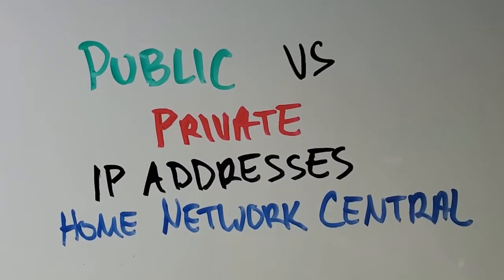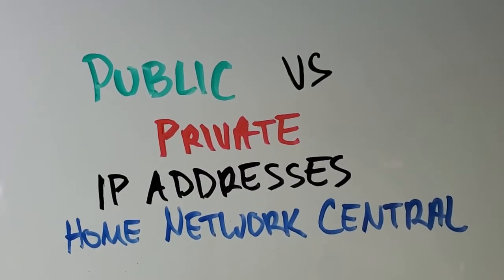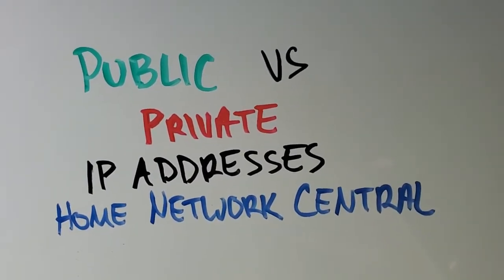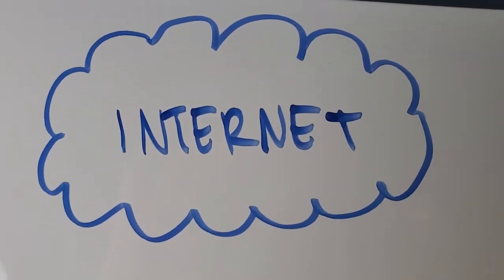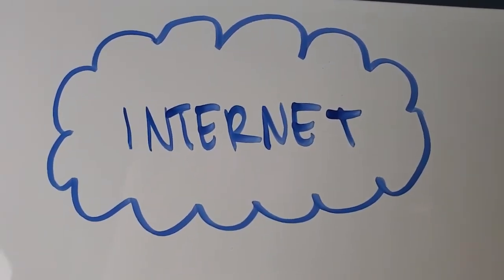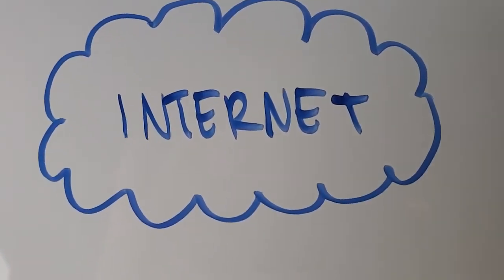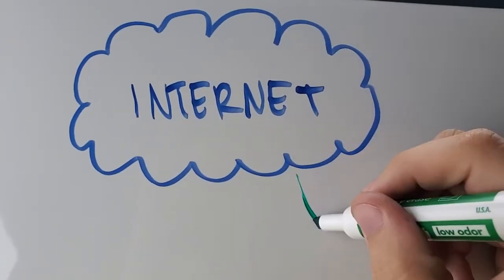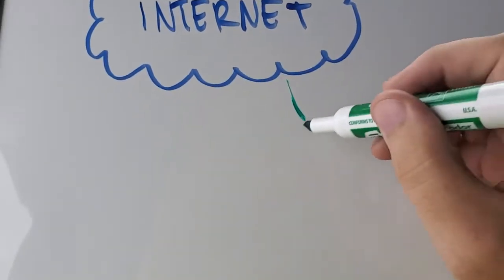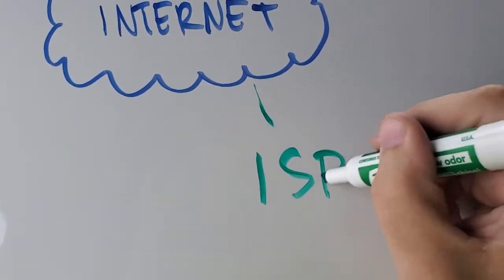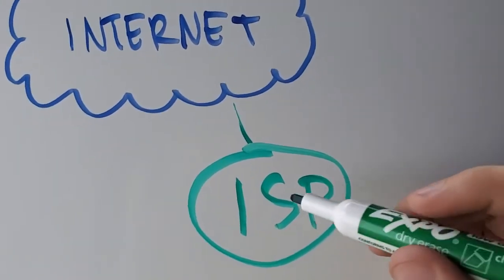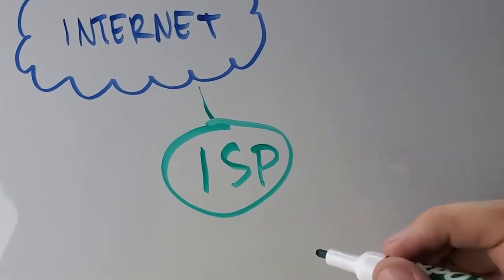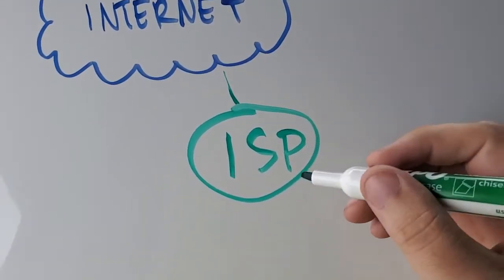Hi, I'm Eric with Home Network Central and I'm going to attempt to explain the difference between public and private IP addresses. Public IP addresses are addresses that are publicly routable on the internet, and basically it all starts with your ISP. Your ISP creates some kind of connection to the internet, and you get your connection to the internet from your ISP.